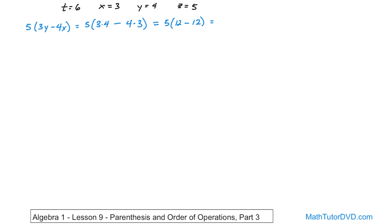Now notice what we have here. Inside the parentheses, 12 minus 12 is 0. And I can mentally drop this parentheses now that I've done it. 5 times 0 is 0. So all of that work just to give us an answer of 0.